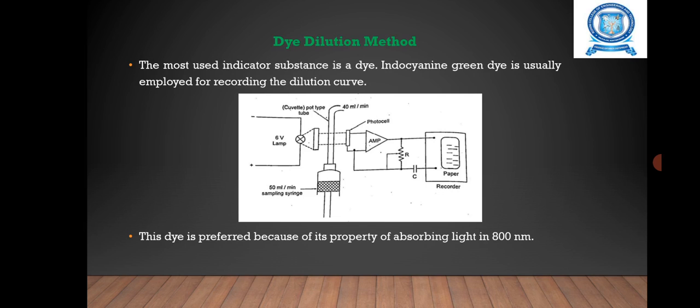The output of the photocell is connected to a low drift amplifier with high input impedance and low output impedance. The output of this amplification is directly proportional to the resistance value of potentiometer R.